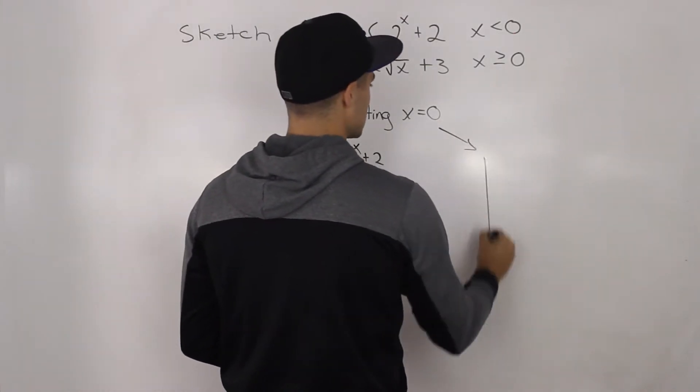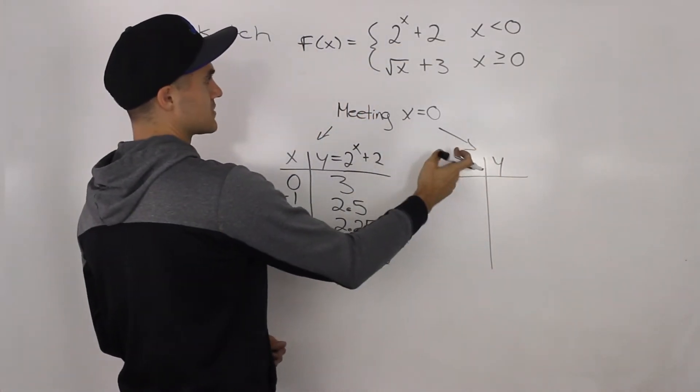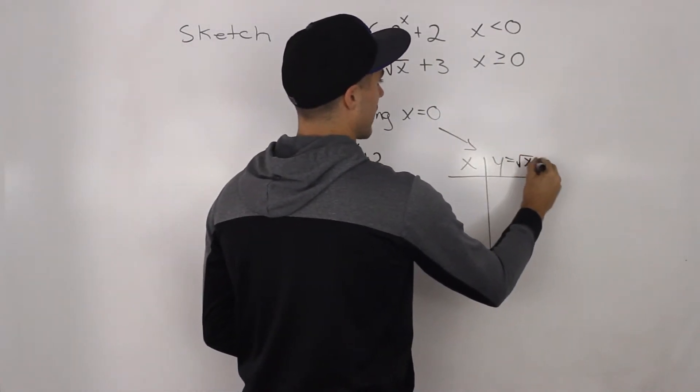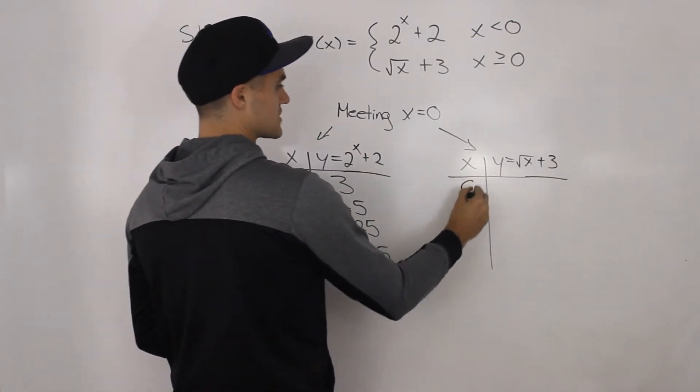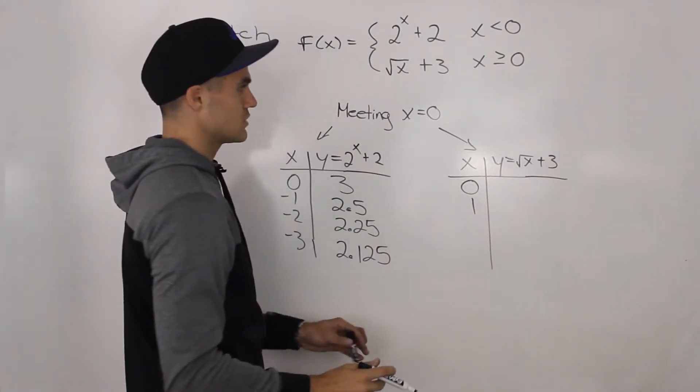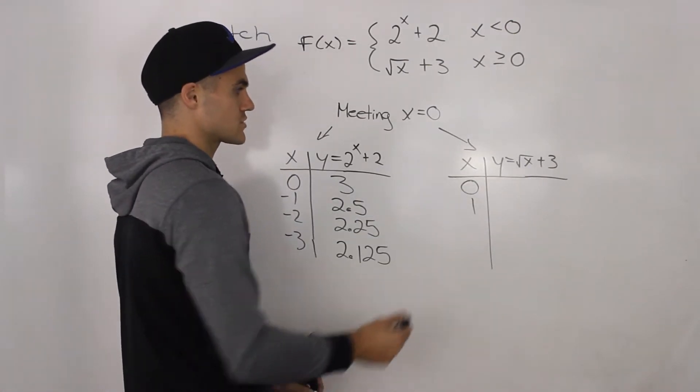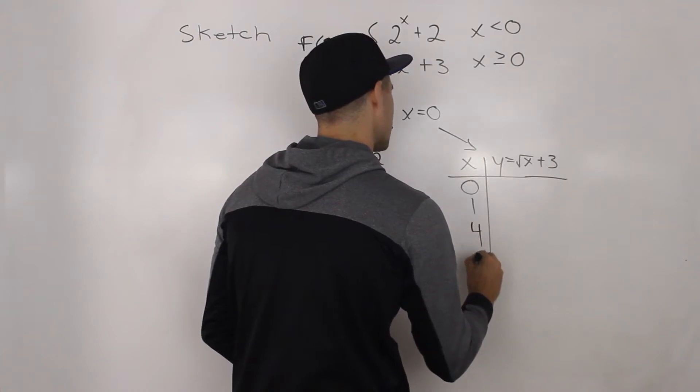And then to the right of x is equal to zero, the y values are defined by the square root of x plus 3. So let's say we have zero one, let's actually use numbers that are going to be pretty smooth in that square root. So zero, one, four, and then let's say nine.